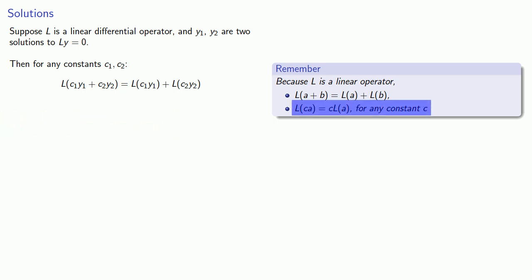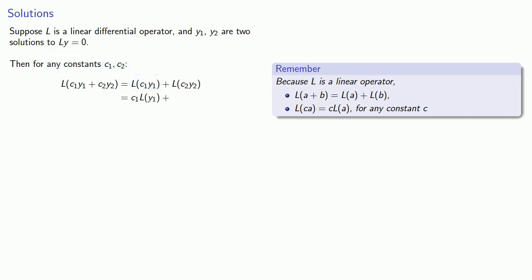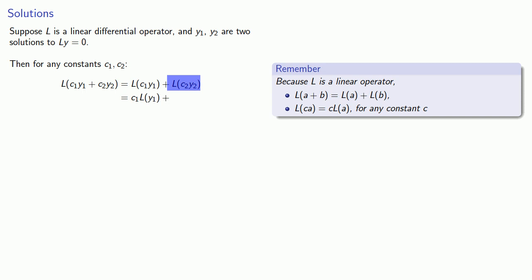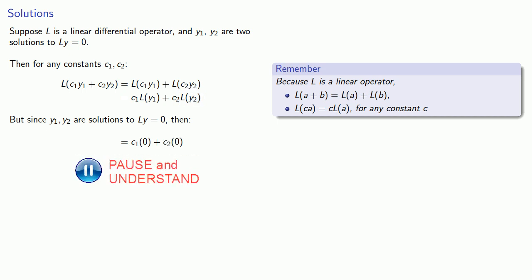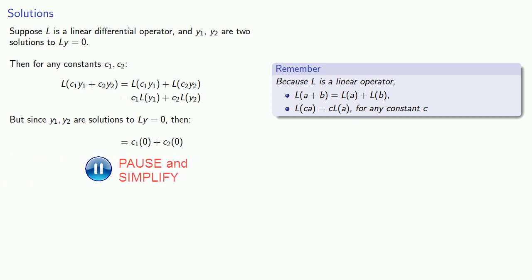The linearity of L means that L applied to C1Y1 — since C1 is a constant — we can remove that constant factor to the front, so this is C1 times L applied to Y1. Similarly, L applied to C2Y2 is just C2 times L applied to Y2. Since Y1 and Y2 are solutions to Ly equals zero, L applied to Y1 is zero and L applied to Y2 is also zero, so this expression simplifies to zero.